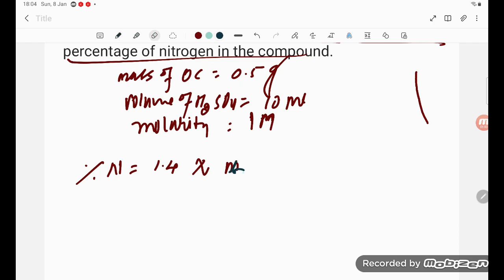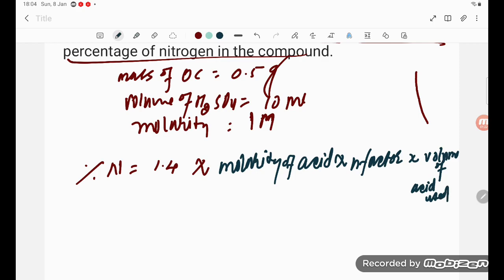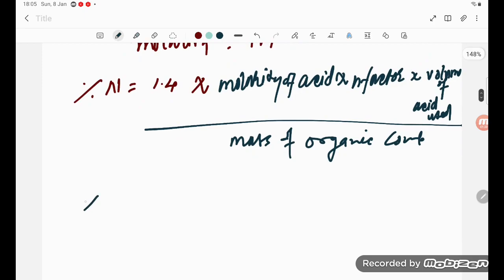Let me rewrite the formula here: molarity of H2SO4, which is molarity of acid, multiplied by n-factor, multiplied by volume of acid used, divided by mass of organic compound. This is the formula for percentage nitrogen.